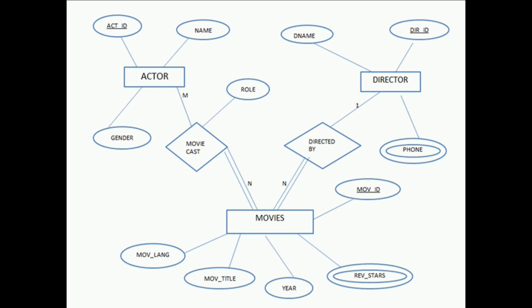Let us see one by one with the help of an ER diagram. In this entity relationship diagram we can see there are three entities: actor, director, and movies. Actor has a relationship with movies in terms of movie cast — m number of actors are cast in n number of movies. Similarly, n number of movies can be directed by a director, so it is n-to-1. Phone and review stars are multi-valued attributes. Movie id is the primary key for movies, director id is a key attribute, and actor id is also a key attribute. There is total participation between movies and movie cast, and between movies and director, because movies must be directed by a director and cast by actors.